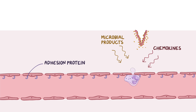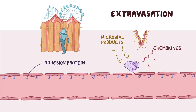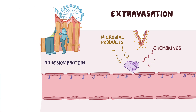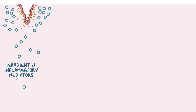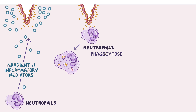The neutrophil then starts to squeeze through the gaps between two endothelial cells until it reaches the other side — this is called extravasation. It's kind of like squeezing between two fence poles to sneak into an amusement park rather than paying admission. The leukocyte then follows the gradient of inflammatory mediators to get to the site of inflammation. Neutrophils are the first leukocytes recruited during the acute inflammatory process, and they immediately start phagocytosing or eating pathogens and damaged cells.